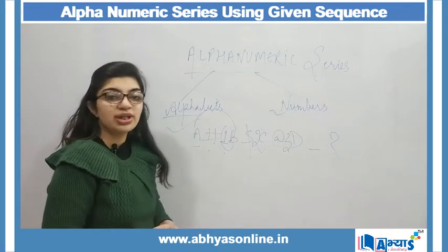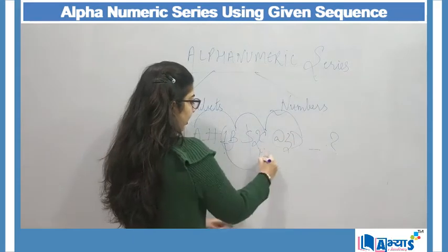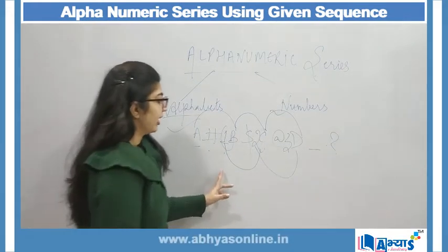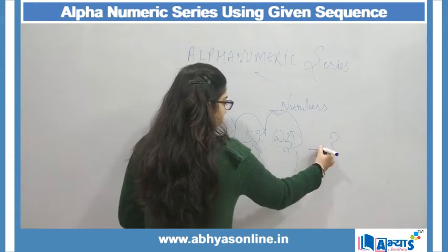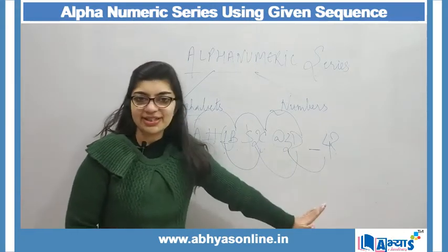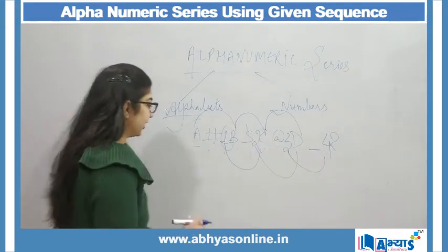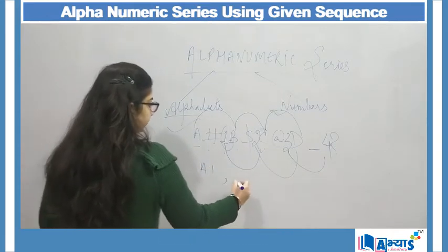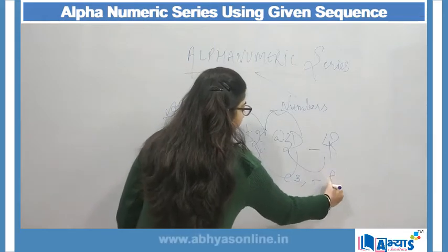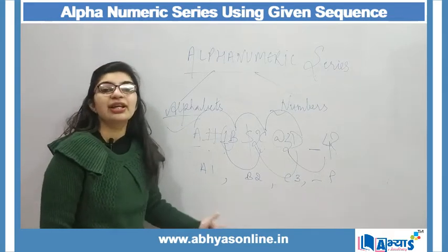B se gaya C pe, aur 1 se aya 2. Then C se gaya D pe, aur 2 se aya 3. Ab mujhe pata hai ki meri alphabets ke aage ek number hai. Toh yahan par underscore ke baad, 3 ke baad kya ayega? Mera answer ayega 4. Series do type ki hoti hai: missing series ya phir wrong series.